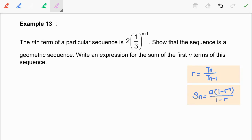In this video, we are going to discuss example 13. The nth term of a particular sequence is 2 times 1 over 3 to the power of n plus 1. This refers to tn.